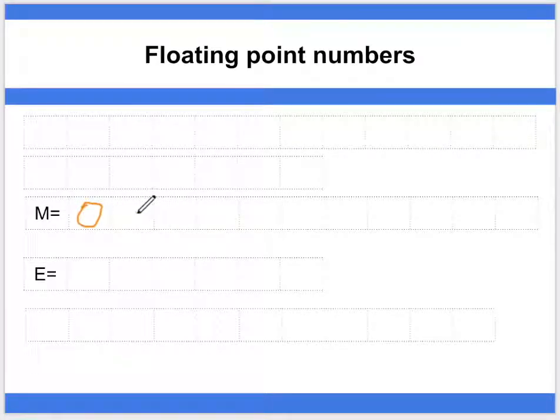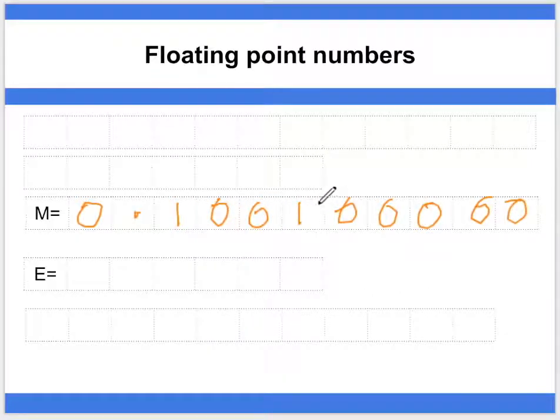First, we're going to put in a positive mantissa, a slightly more straightforward one to work with. So 0.10010000 and our exponent is going to be 1110.